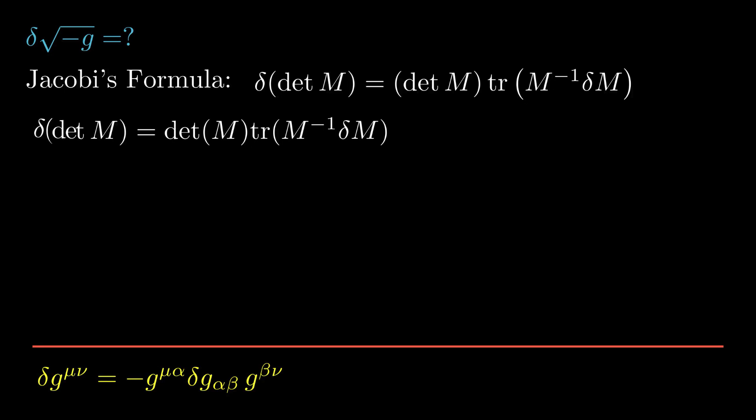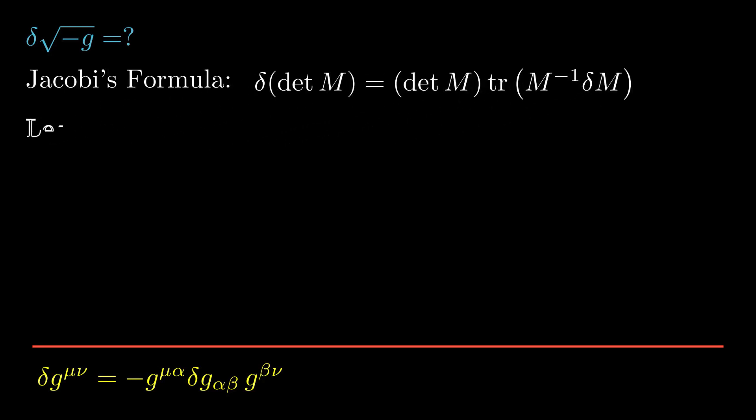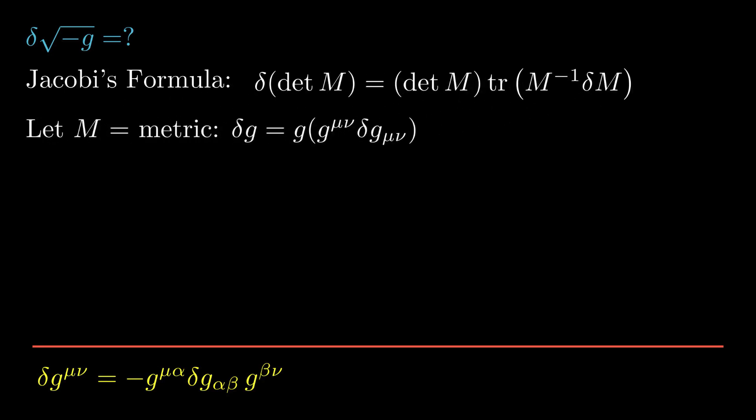We can apply Jacobi's formula to the metric to obtain delta G equals G times G upper mu nu times delta G lower mu nu. From here, it's straightforward to show that the variation of the square root of minus G equals one half times the square root of minus G times G upper mu nu times delta G lower mu nu.